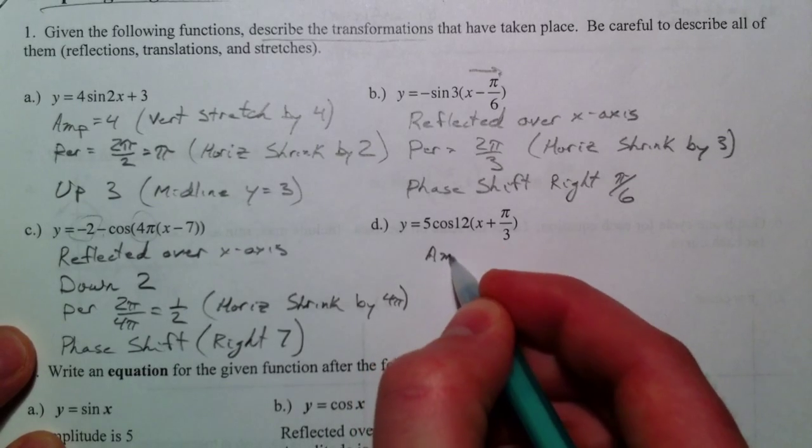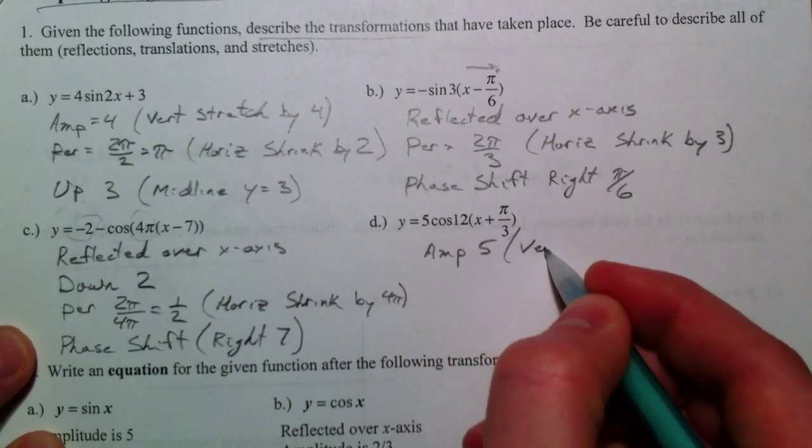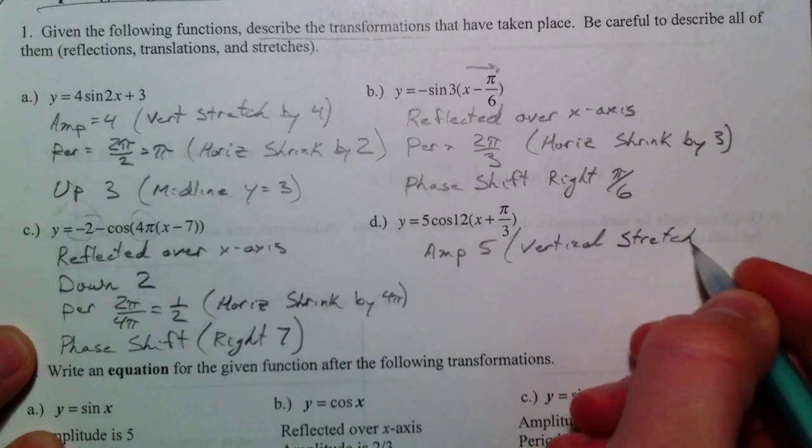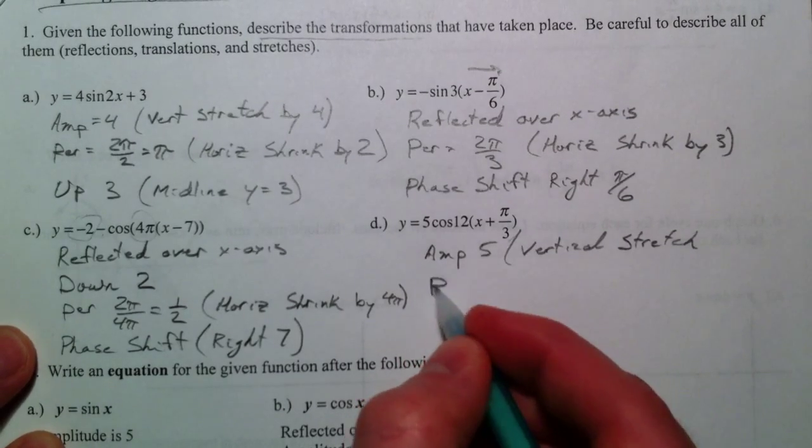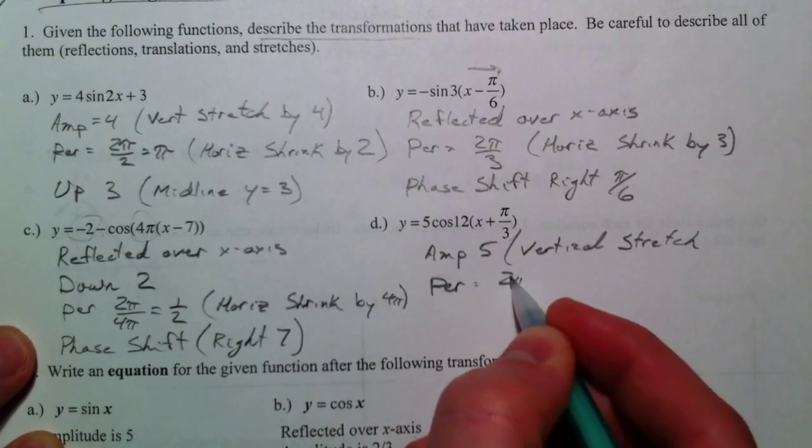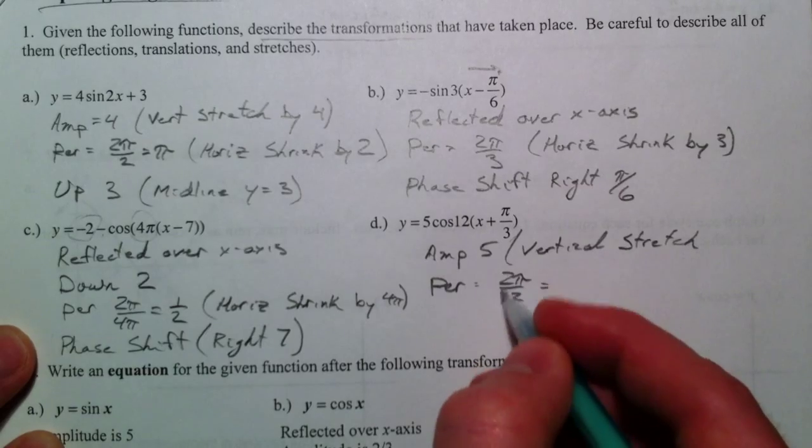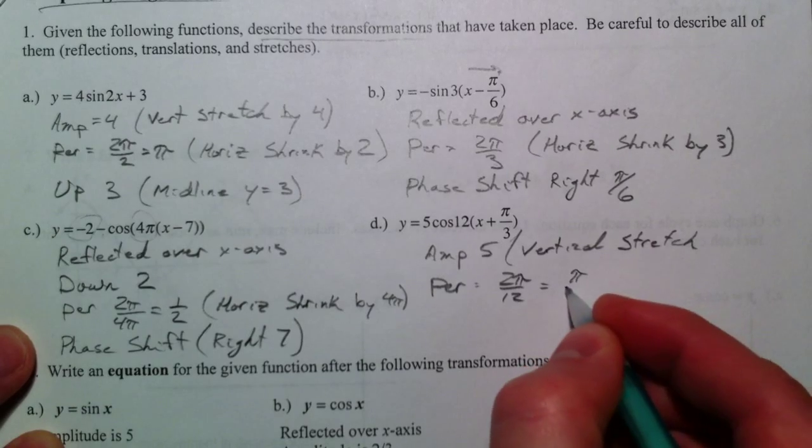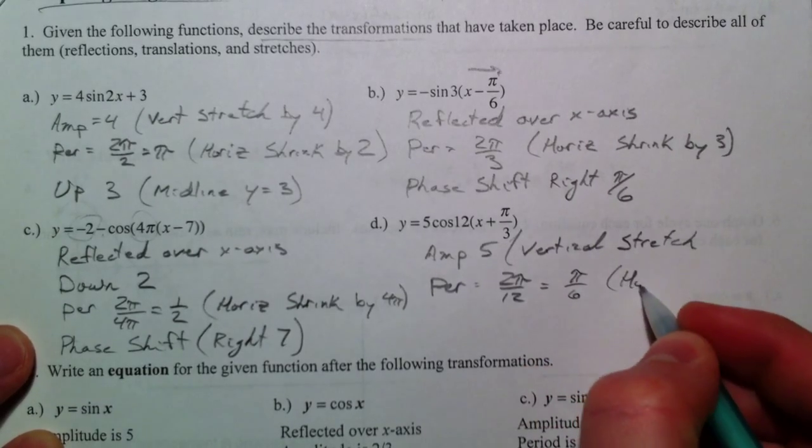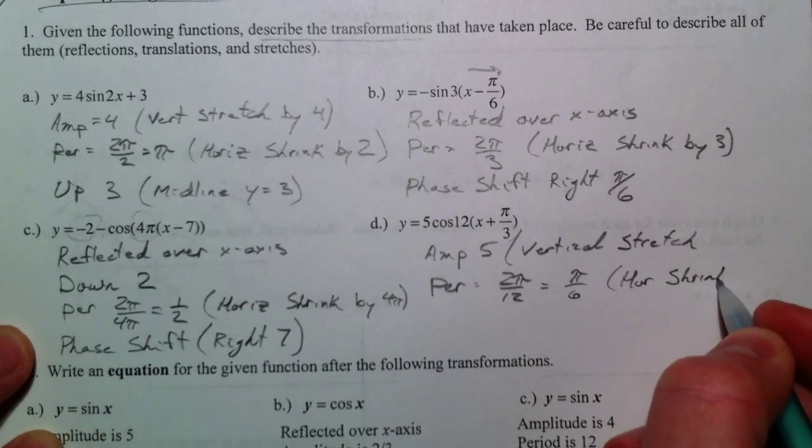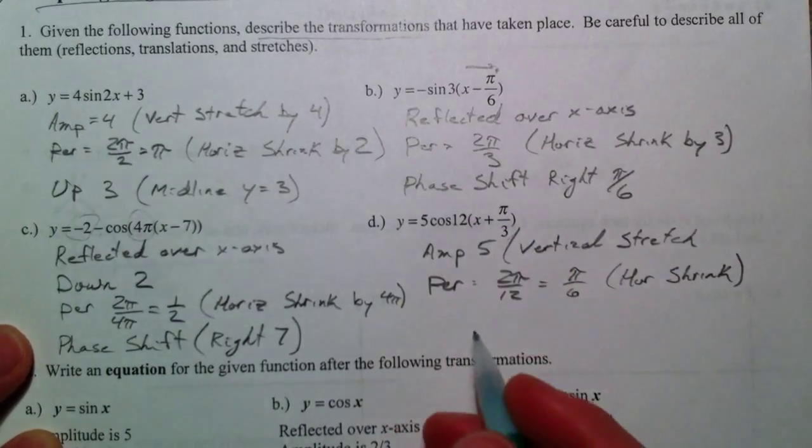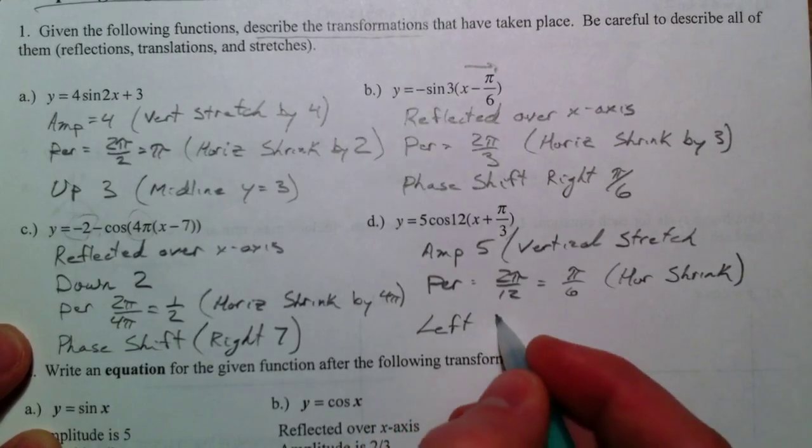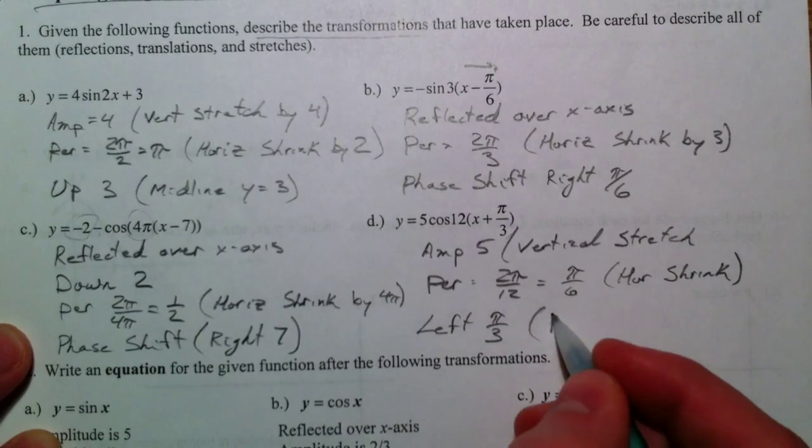5 is the amplitude. Vertical stretch. 12 is the period. Used to be 2 pi, but now it's being divided by 12. And so that, the 2 and the 12, simplify to 1 over 6. So we get pi over 6 is the period. Again, horizontal shrink. And the plus pi over 3 moves the opposite of what we think, so it actually moves it left. Pi over 3. That's a phase shift.